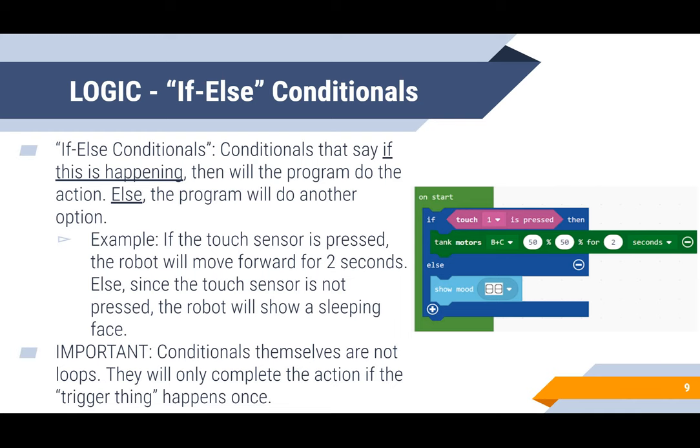The second type of conditional is called an if-else conditional. These conditionals say that if this is happening, then the program will do the action. Else, the program will do another option. For example: if the touch sensor is pressed, the robot will move forward for two seconds. Else, since the touch sensor is not pressed, the robot will show a sleeping face.